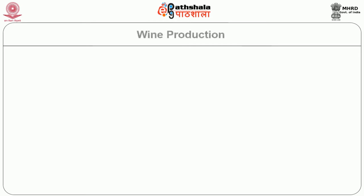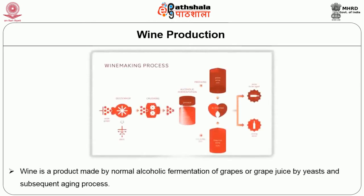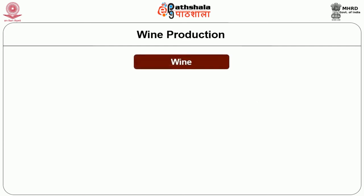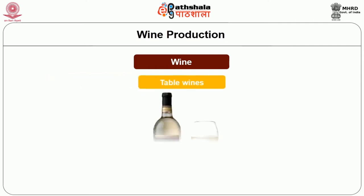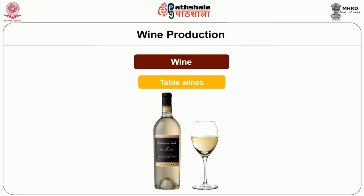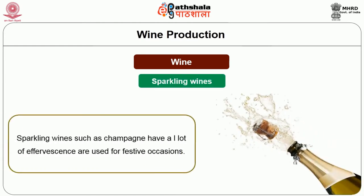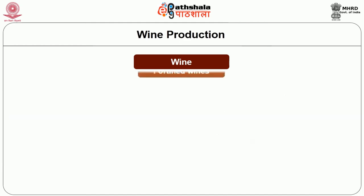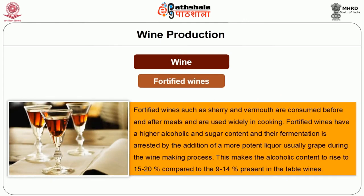Now we shall look into wine production. Wine is a product made by normal alcoholic fermentation of grapes or grape juice by yeast and subsequent aging. Wine is classified into three major categories: table wines, also termed still wines, consumed as complementary food; sparkling wines such as champagne, which have effervescence used for festive occasions; and fortified wines such as sherry and vermouth, consumed before and after meals and used widely in cooking. Fortified wines have higher alcoholic and sugar content, and their fermentation is arrested by the addition of more potent liquor, usually grape spirit, making the alcohol content rise to 15 to 20% compared to the 9 to 14% present in table wines.